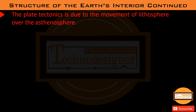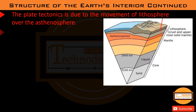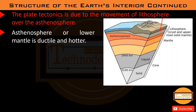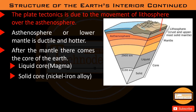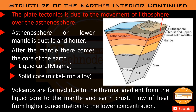Plate tectonics in the Earth's interior is due to the movement of the lithosphere over the asthenosphere. The asthenosphere, or lower mantle, is ductile and hotter. After the mantle comes the core — a liquid core (magma) and a solid core (nickel-iron alloy). Volcanoes are formed due to the thermal gradient from the liquid core to the mantle and Earth's crust, as heat flows from higher to lower concentration.